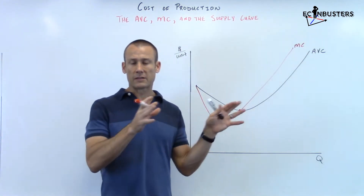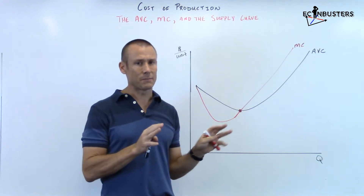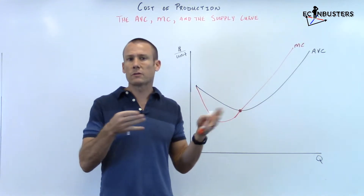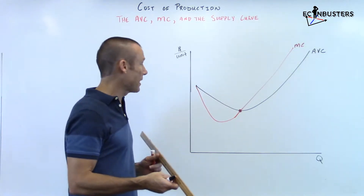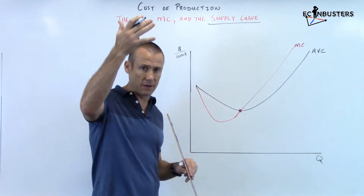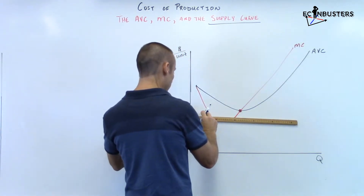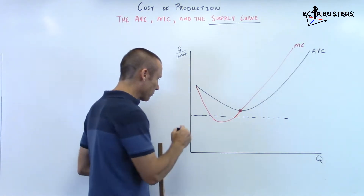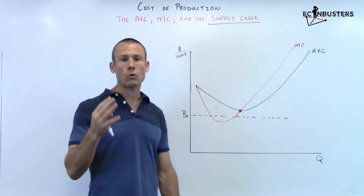We've got MC, we've got AVC, and now we've got the supply curve. I'm going to pick up my ruler and talk about some different prices. Remember, the supply curve tells us all the different quantities supplied at various price points — it's a relationship between quantity supplied and price. I'm going to draw a price point low right here, just a dashed line. It's dashed because it's not a function — it's just a price point.